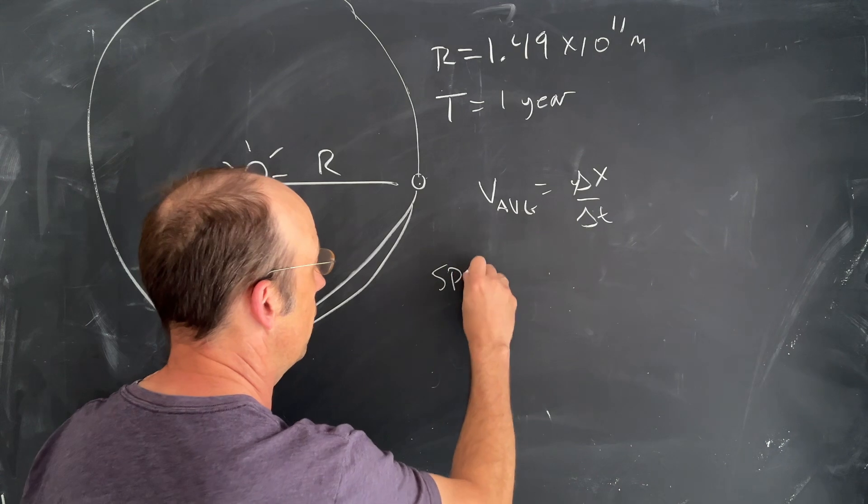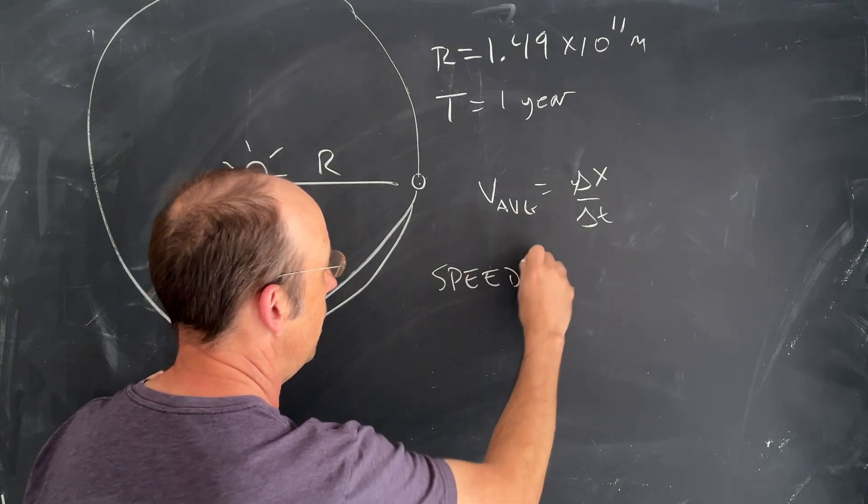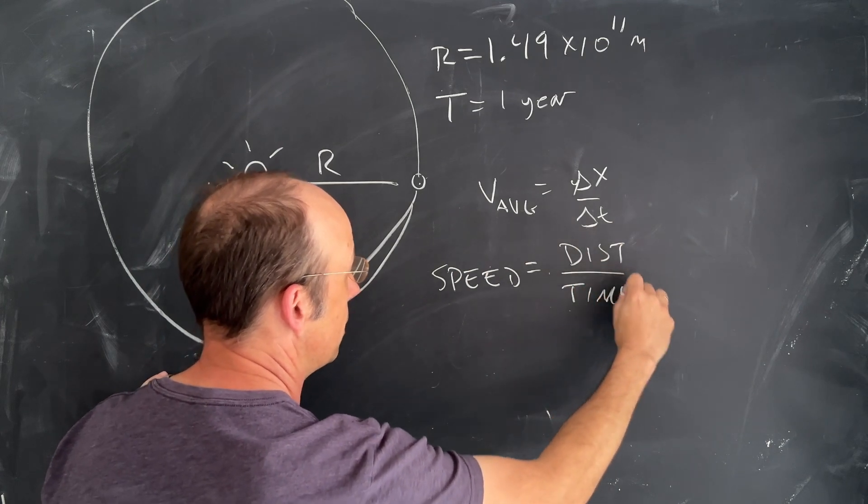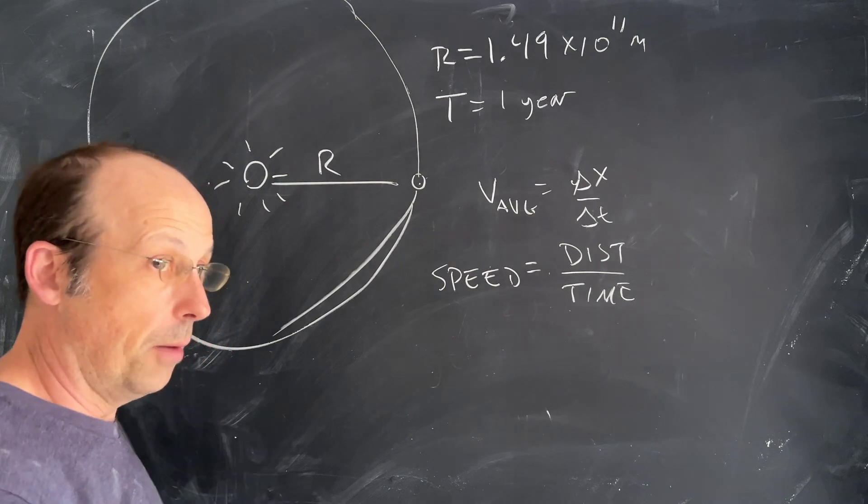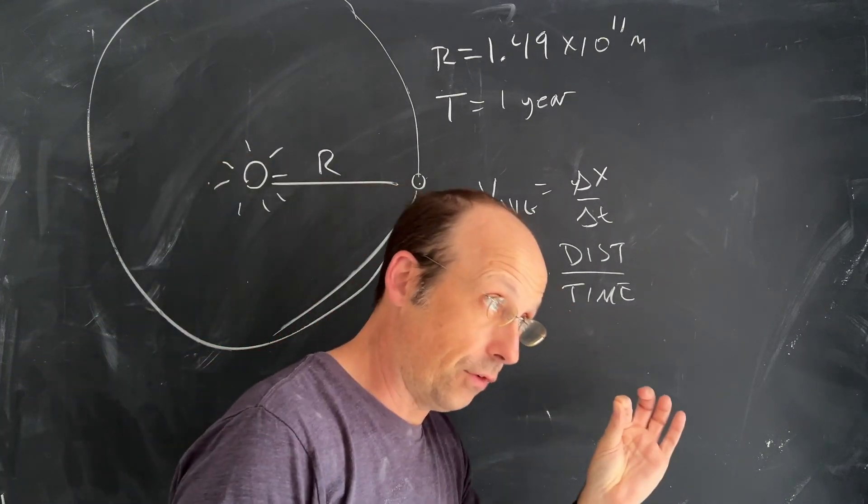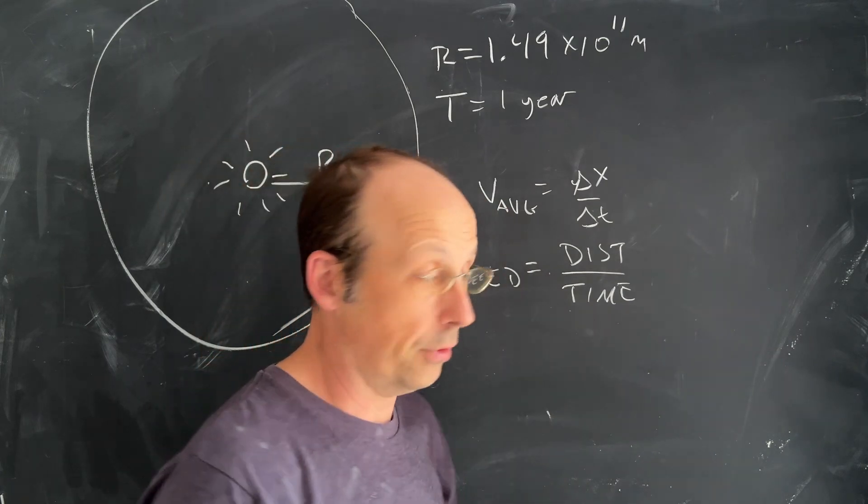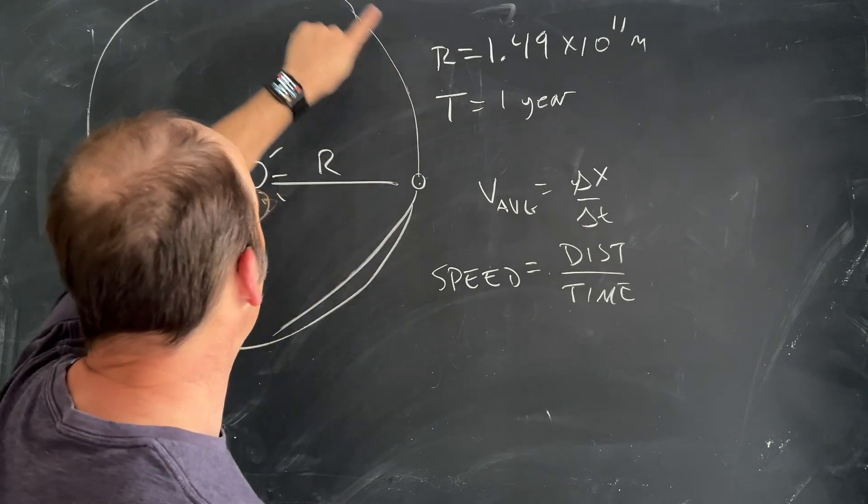So we're actually going to look at the speed. The speed is going to be equal to the distance traveled divided by the time it takes. We have to be careful—that's not the same thing as velocity. The average velocity around one trip is zero. But we can calculate the speed.